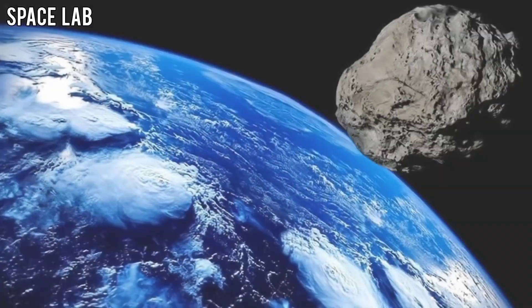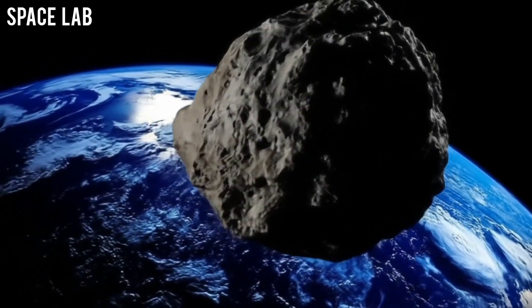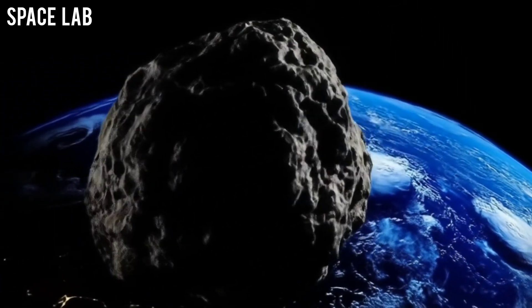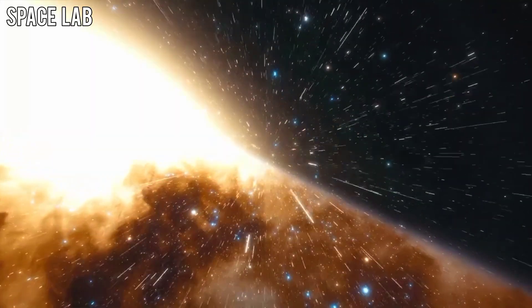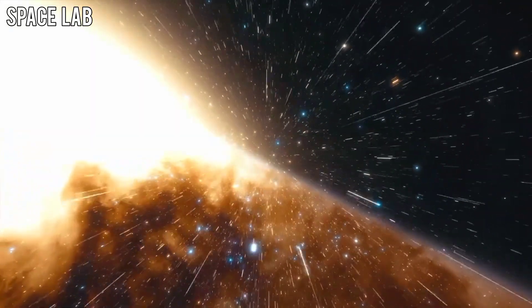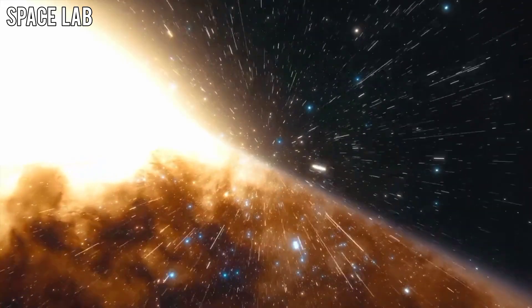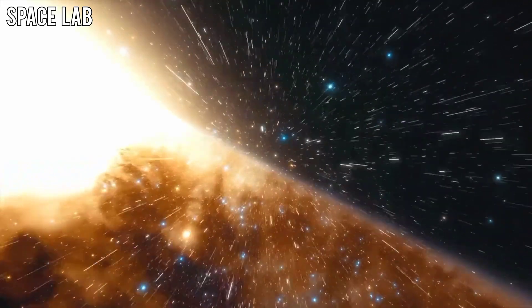If Atlas collides with Mars, the impact could vaporize part of its surface, disrupt its thin atmosphere, and destroy decades of exploration hardware. But if the object slows before impact, as the latest data hints, it might not be a crash at all. It might be a landing.